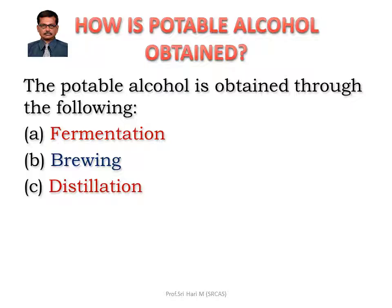How is potable alcohol — that is, drinkable alcohol — obtained? There are three ways of obtaining potable alcohol: through the fermentation method, the brewing method, and the distillation method. We will see these three methods in the coming slides.